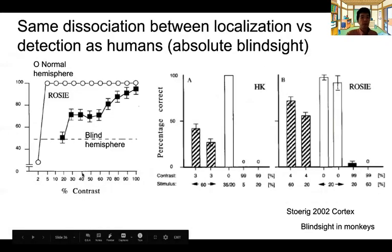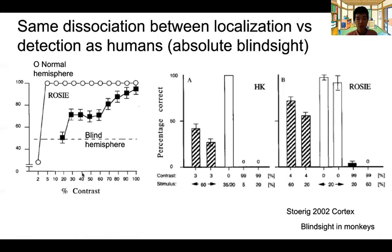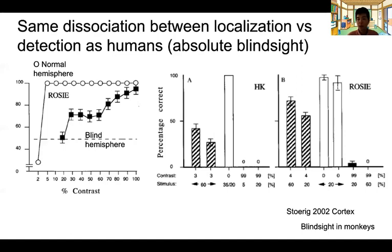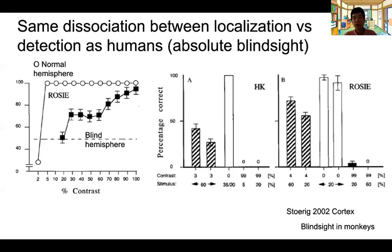The 2002 paper not only compared the human patients but also Rosie, who had participated as a control in the 1995 paper and subsequently acted as a blindsight monkey. Rosie was trained on the tasks before the lesion, and then tested six months after recovery. The experimental format was slightly different from the human counterpart — she was tested on normal and lesioned hemispheres separately.